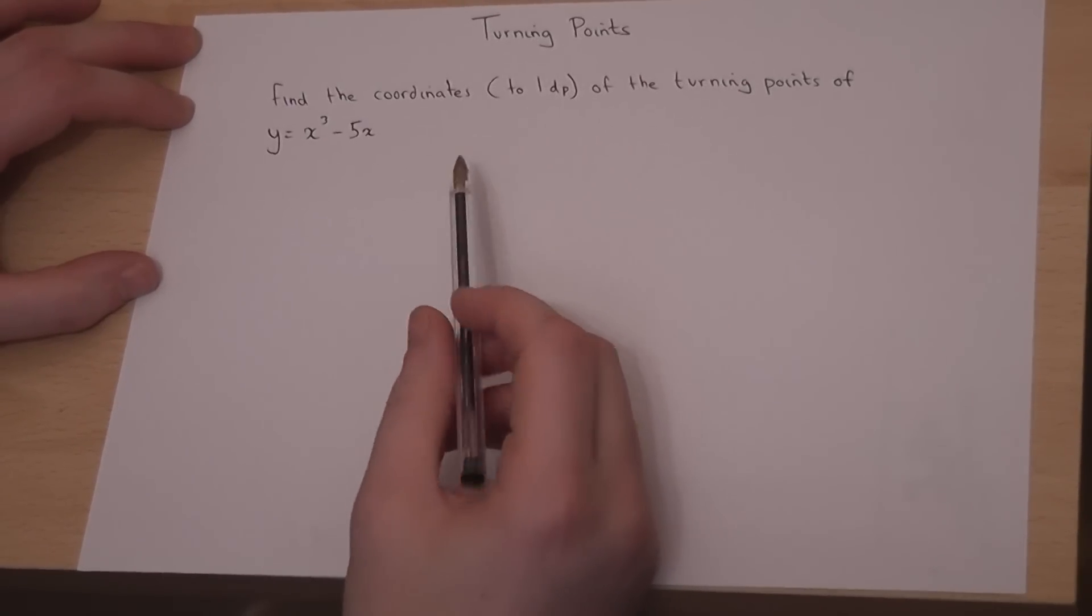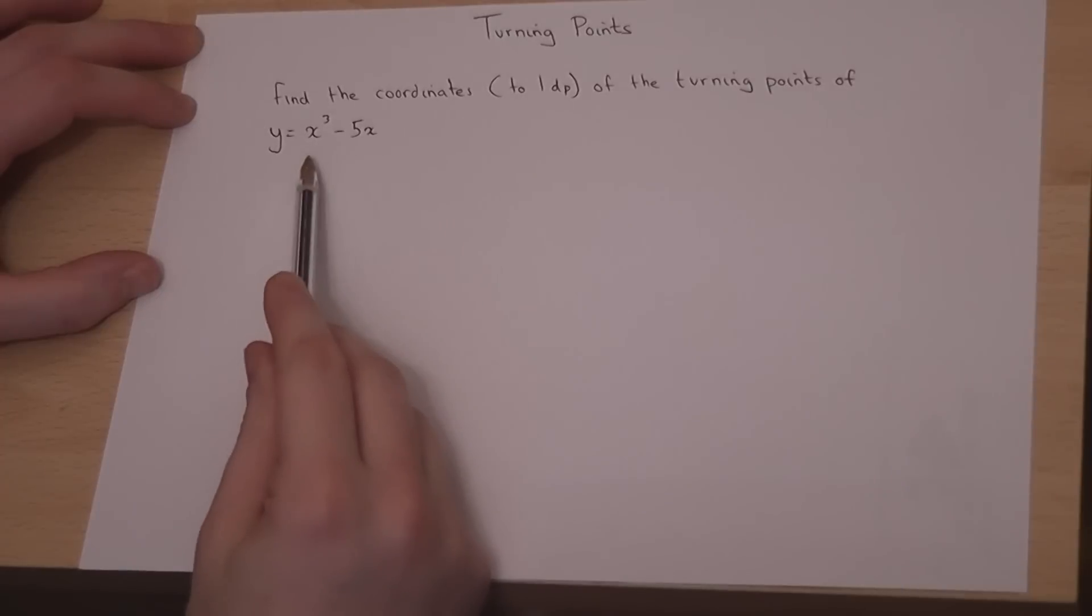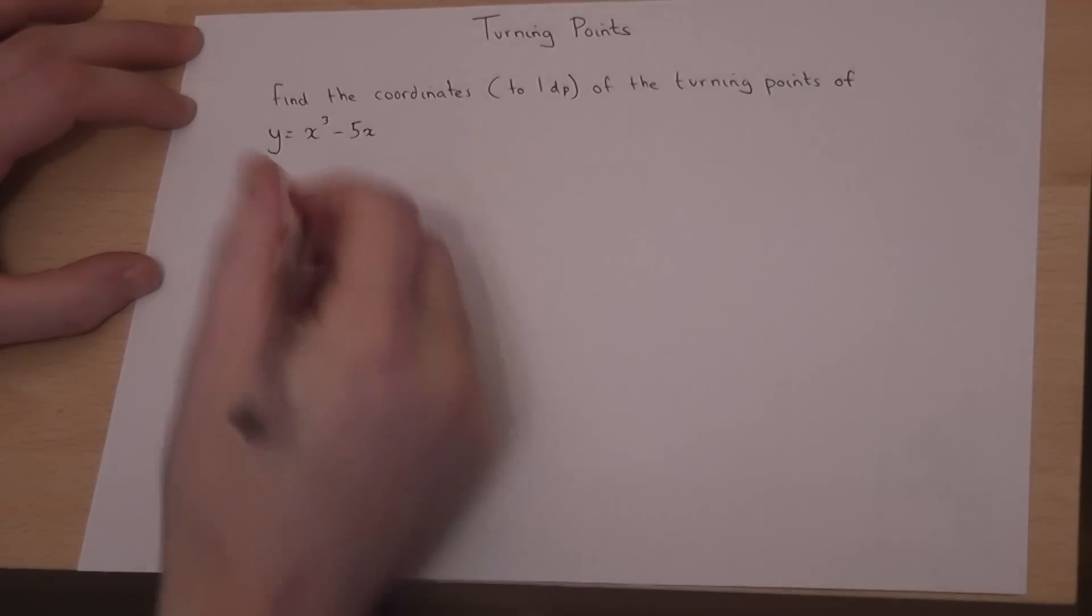This video looks at how to find the turning points of a given function. Now a turning point, or a stationary point, is where dy by dx, or the differential, equals 0.